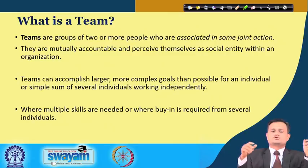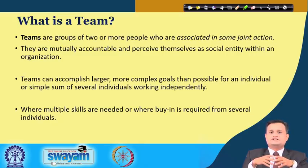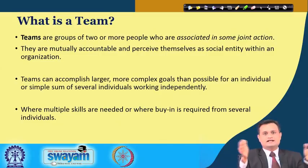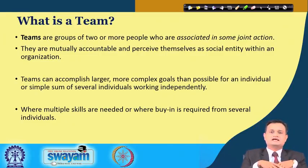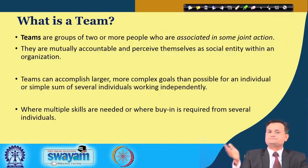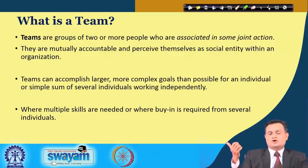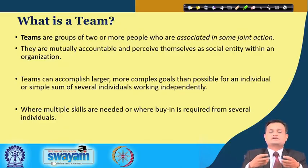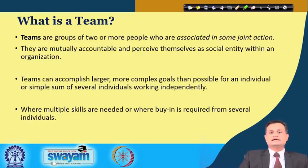Let us understand what is a team. Should I call anything as a team? Suppose I am walking around a city with two or four friends — should I call it a team? A team is basically a group of two or more people associated in some joint action for a particular purpose. You can have multi-skilled people — a bowler, a batsman, a fielder — but the ultimate goal is to win the match. When people with multiple skills are integrated to achieve a particular goal, then it is a team.